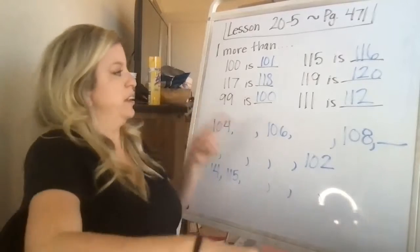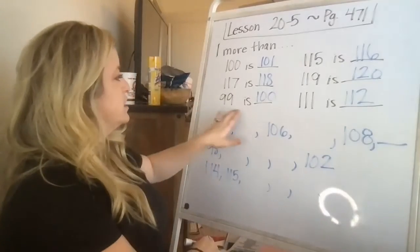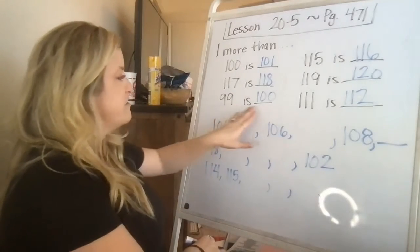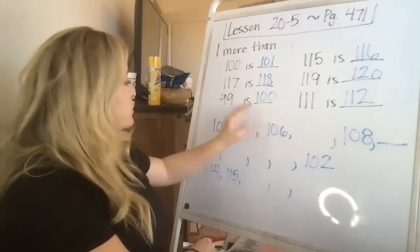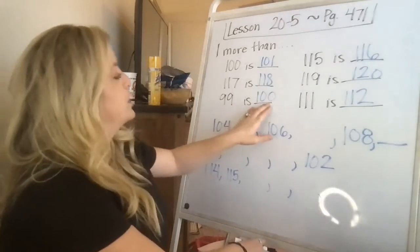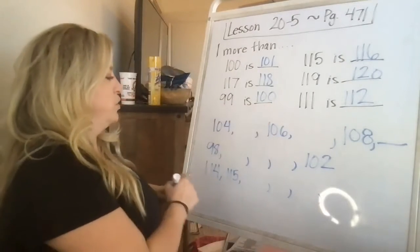So every time you're just going up by one. It may look like on some that you're going up more than that, but you're really not. If you were going up 10, it would be 109, but you're just going up one more.